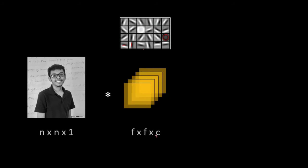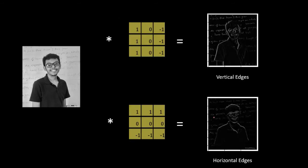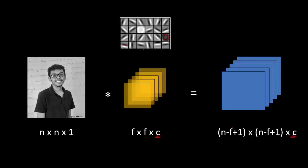If we use C number of filters in one layer, the resultant output will have C number of images. As seen previously, convolving a single image with two different filters gave two different output images. So convolving a single image with C filters gives C output images. Thus, convolving a grayscale image of size n×n with a filter of size f×f using C total filters gives an output of size (n−f+1)×(n−f+1)×C.